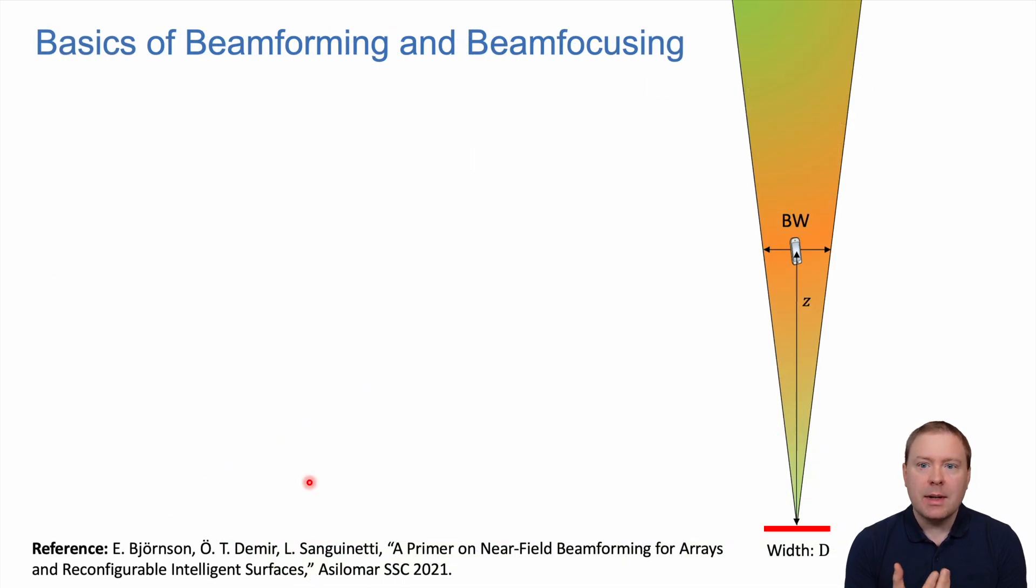When transmitting from a particular antenna array towards a target user at distance d, there will be a beam width. The traditional formula for the 3dB beam width is approximately 0.886 times the wavelength divided by the width of the antenna. This happens regardless of how close or far away the user is. The angular beam width always follows this formula.